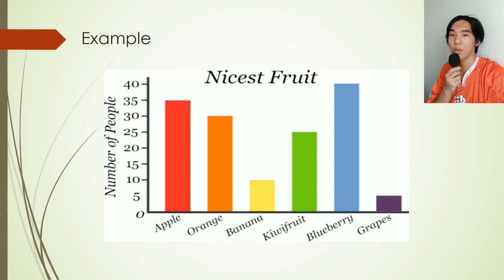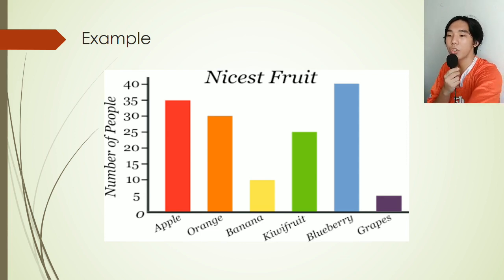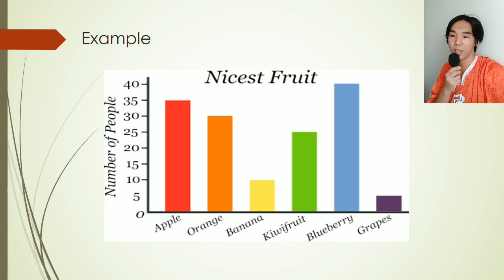Bar and line graph are almost similar in perspective. They both have vertical and horizontal plots to determine the data being provided. In my opinion, bar graph is the most effective way of representation of data, because it can clearly show the details of a particular data — it uses color to differentiate different specifications of data being provided, and it can clearly present needed information in just a simple and colorful way. We can simply tell that apples and blueberries are chosen to be the nicest fruits according to this bar graph, just by comparing its bar heights and color.